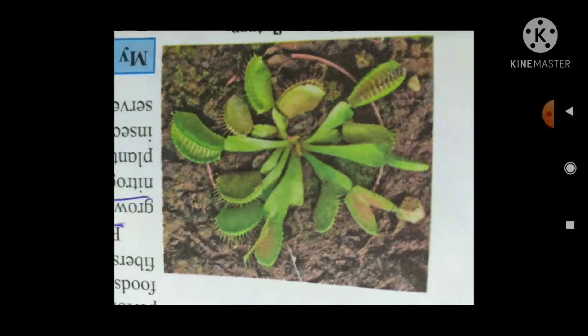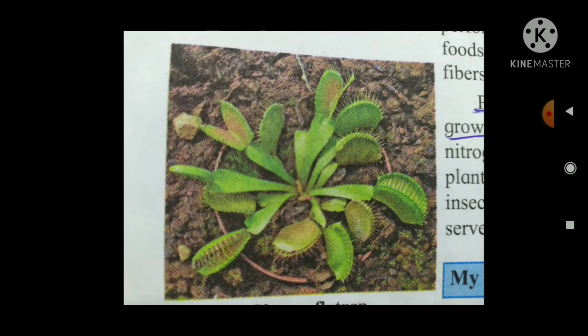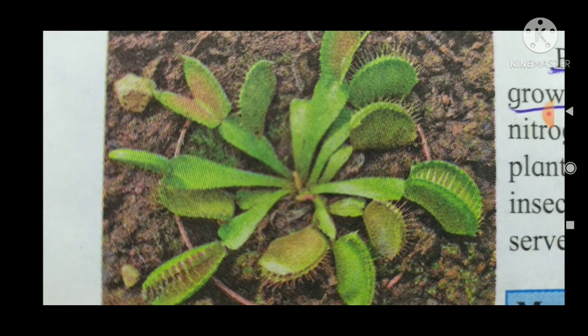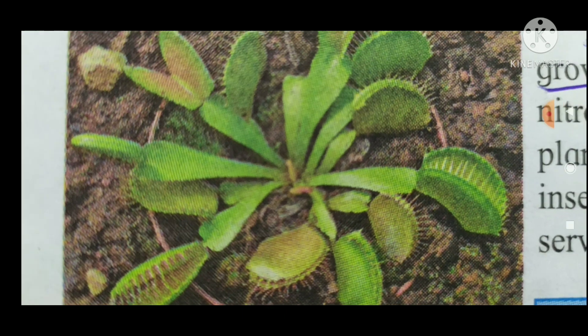This is a Venus flytrap. It is a source of nitrogen and phosphorus. Plants which grow in nitrogen-deficient soil attract insects and hold them captive. This is a fly trap.